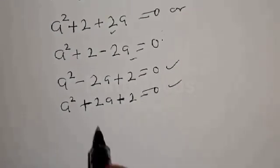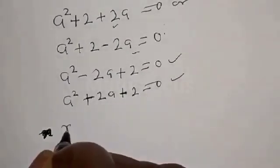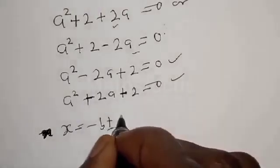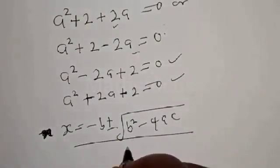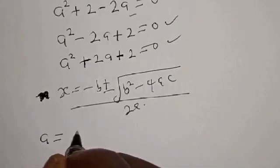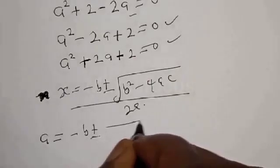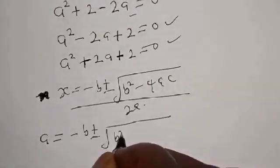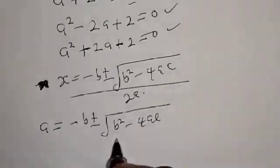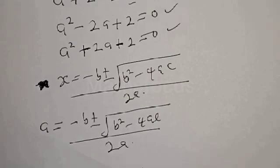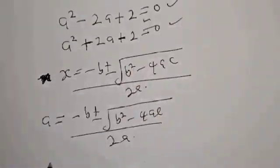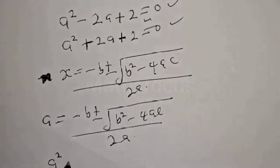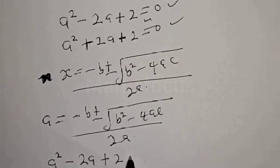We have two cases now. Let's solve each using the quadratic general formula: a equals minus b plus or minus square root of b squared minus 4ac, over 2a. Starting with the first case: a² minus 2a plus 2 equals 0.